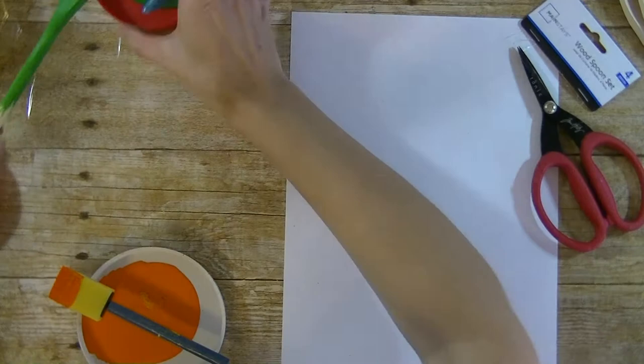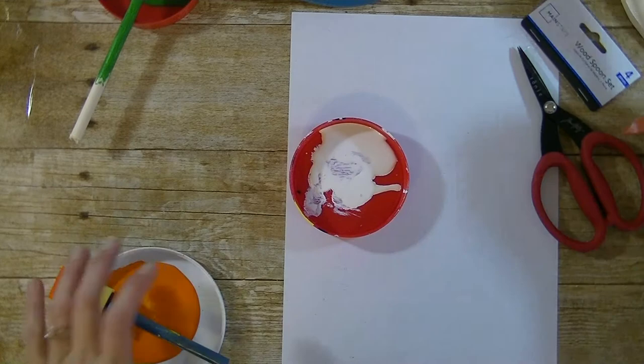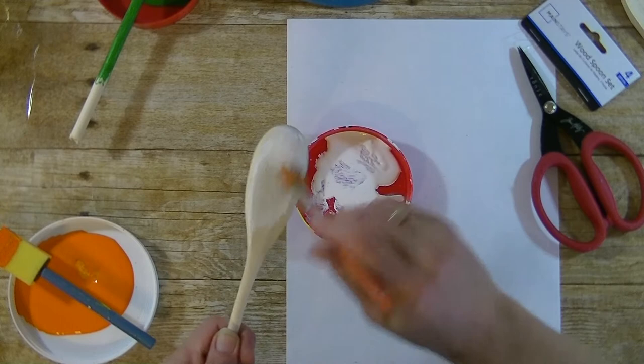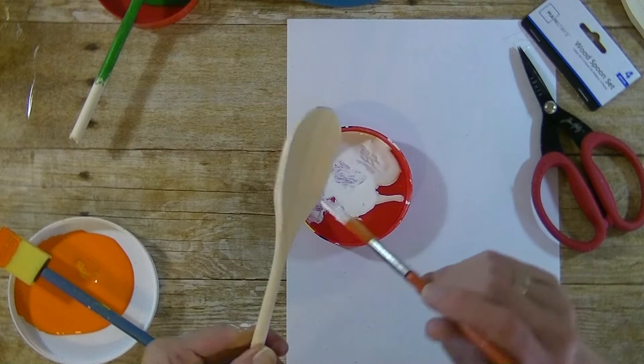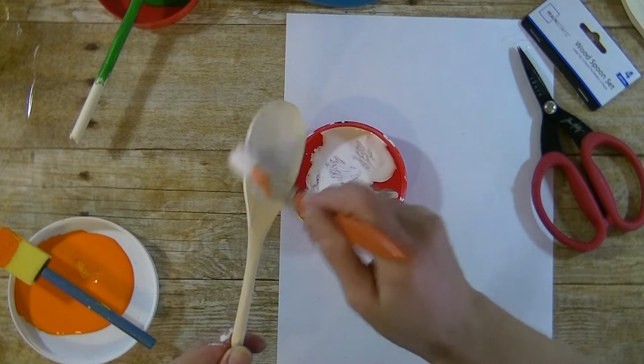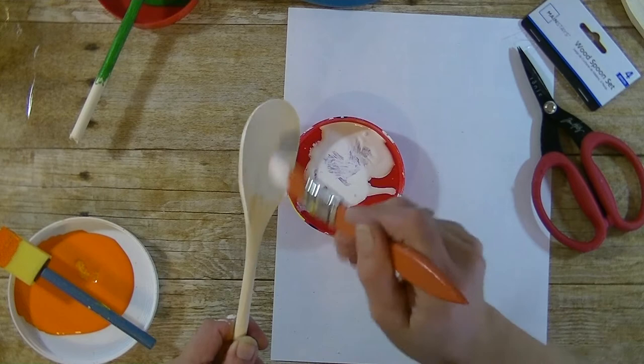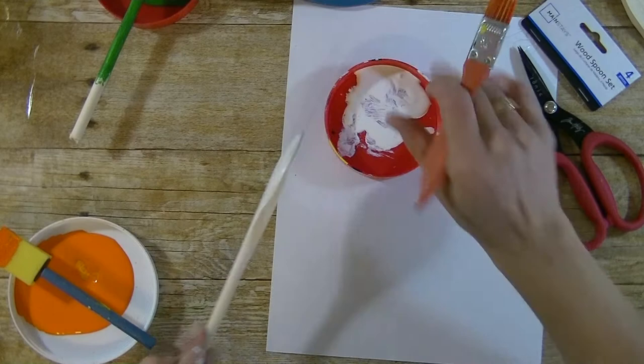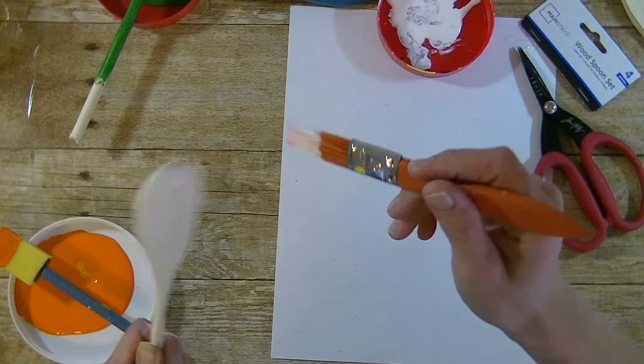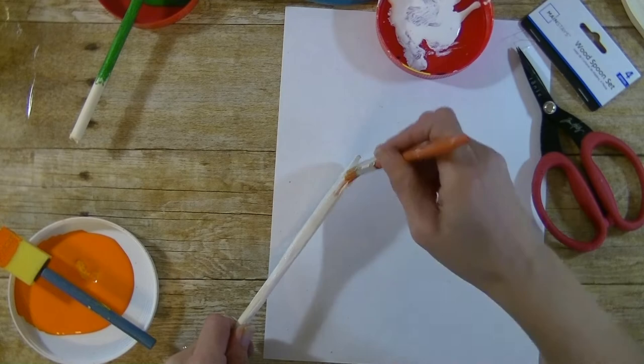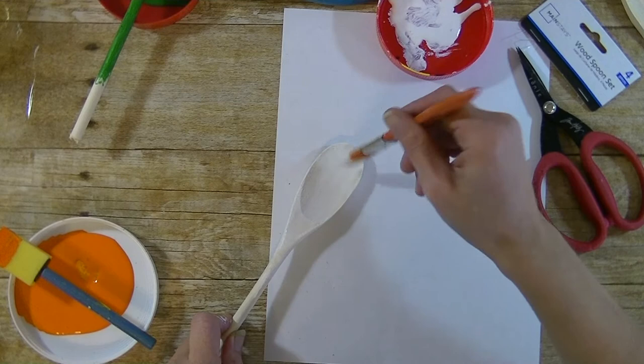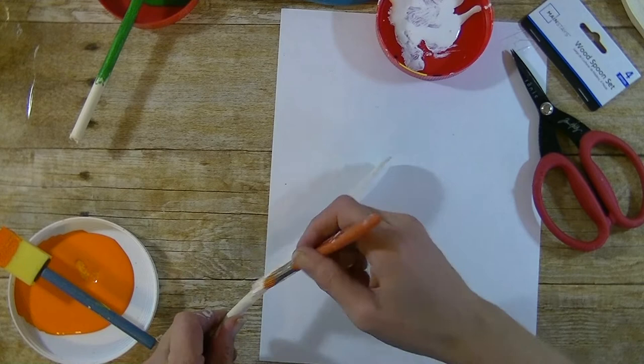I am just going to take my brush and just kind of get off all the extra paint. That will dry pretty quickly for us. Let's grab our white paint. And the ghost was our smaller one. Now my white paint took a little while to dry, so I am going to go extra thin on it. They also sell white spoons. You can use those as well. For some reason the white takes a little bit longer to dry.